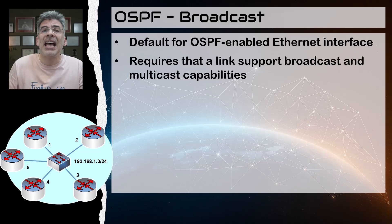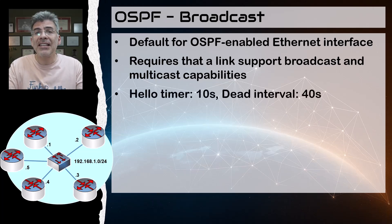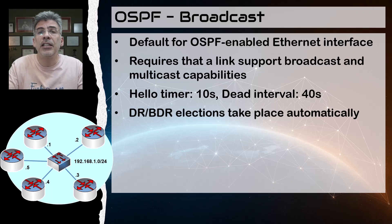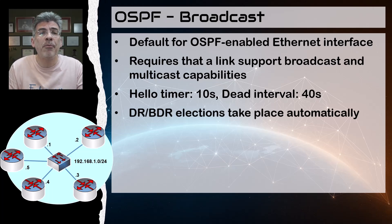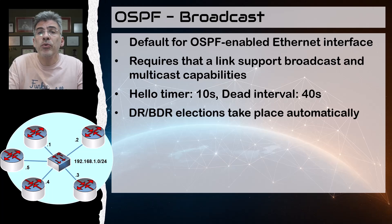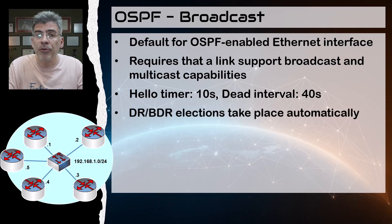Each network type also has default behaviors for the hello and dead timers, as well as whether DR/BDR elections take place. For a broadcast network type, the default hello interval is 10 seconds and the dead timer is 40 seconds. A broadcast network type requires the use of a DR and BDR, which are automatically elected using the DR/BDR election process. This is the default behavior of OSPF on Ethernet interfaces, which is what we've been using in previous videos without changing the network type.